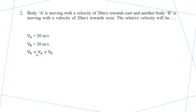Since the two bodies are moving in opposite directions, Vr is equal to Va plus Vb. Putting values: Vr equals 20 plus 20, which equals 40. So the relative velocity of A with respect to B is 40 meters per second.